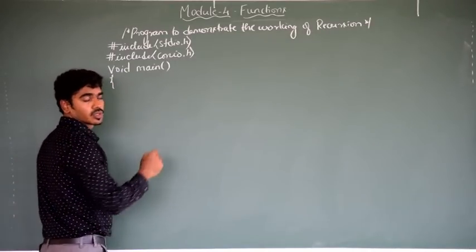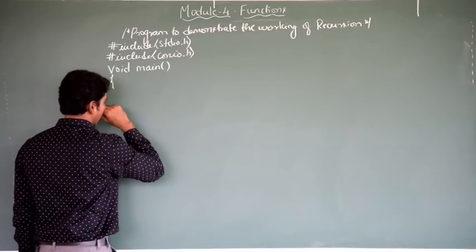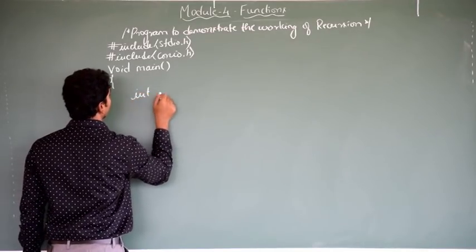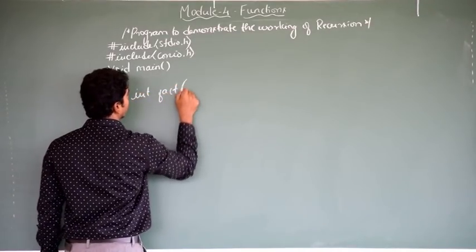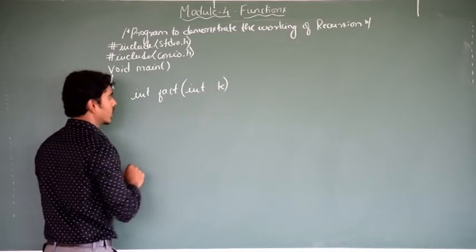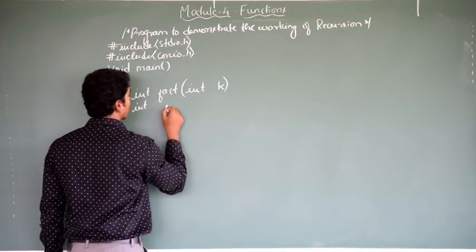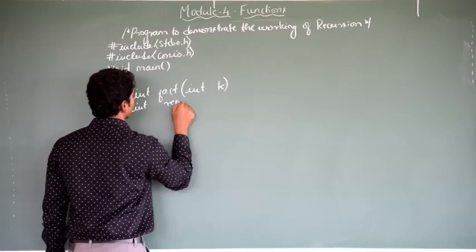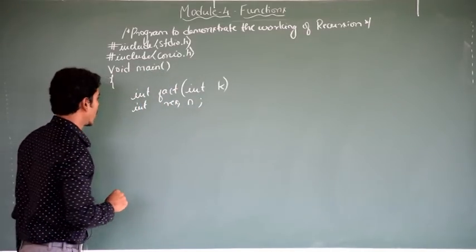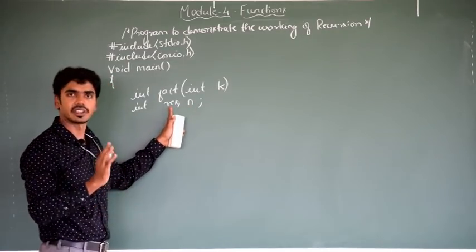Let me declare the variables I need for my program. Before that, let me also declare the prototype: int fact(int k). This is the function prototype. I have taken two variables — n is for the input number, and res stands for result.